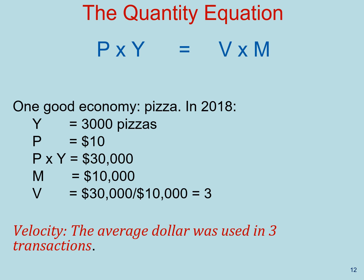Now that we understand the connection between the quantity of money and the price level, let's think about it from the perspective of a whole country. On the left-hand side of this equation, you have the price level P multiplied by real GDP Y — those two together are nominal GDP. On the right-hand side, you have the velocity of money V times the money stock M. Every transaction recorded in nominal GDP has a monetary counterpart; the stock of money must have changed hands enough times to have bought everything measured in nominal GDP.